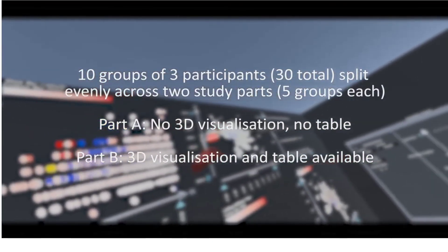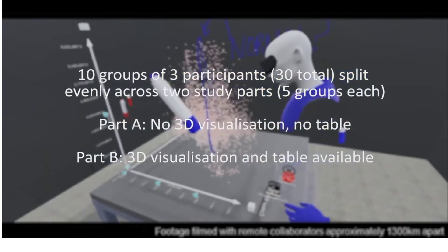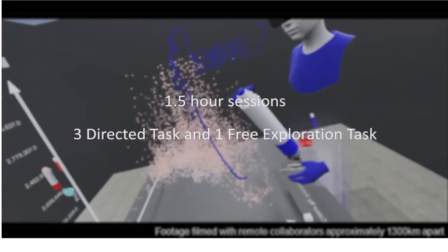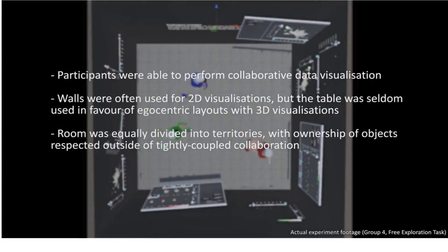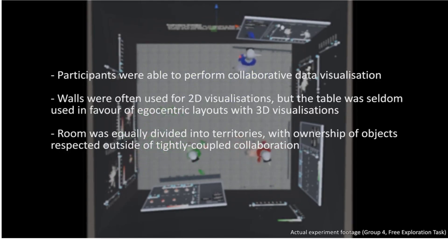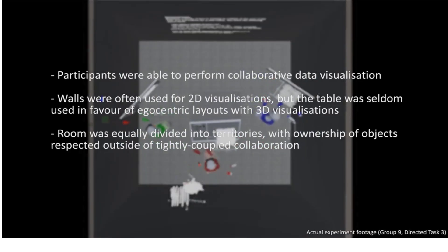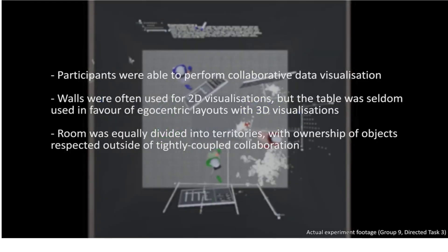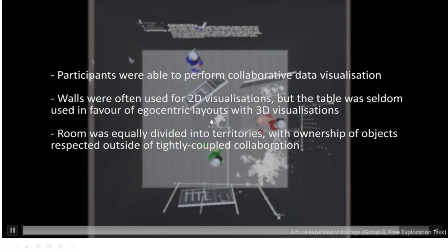There were 10 groups of 3 participants total: 5 groups in Study Part A, restricted to 2D visualizations without a table, and 5 groups in Study Part B, with 3D visualizations and a table. They were asked to solve data visualization tasks together, using a mix of directed and free exploration tasks. Key findings: groups were able to perform collaborative visualization tasks in the immersive environment, typically using mixed-focus collaboration styles. Participants used walls to organize work with 2D visualizations, but switched to less-organized egocentric layouts with 3D visualizations. Many groups did not use the table for tightly-coupled work, instead placing visualizations in comfortable positions in space. Source code for FIESTA is available in the paper.